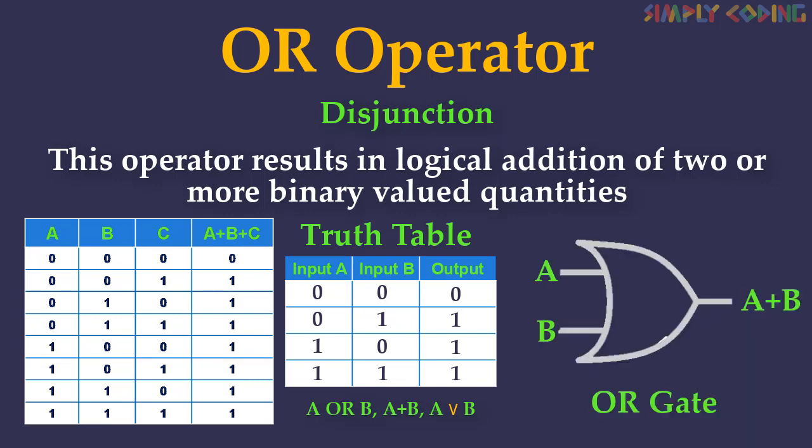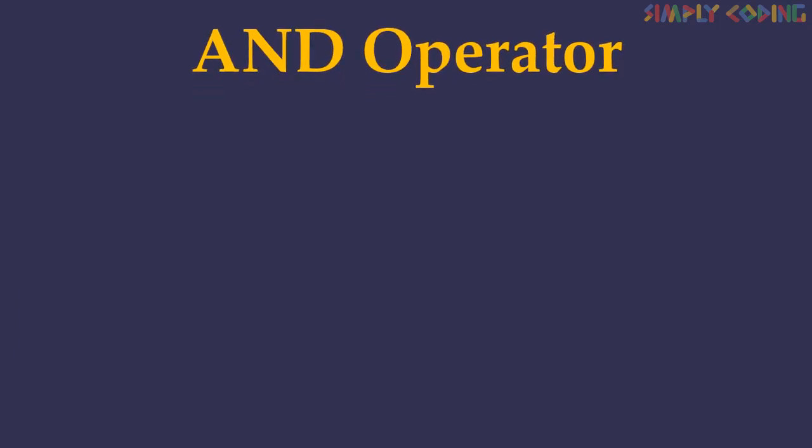The OR operator is denoted by a plus sign or V sign. A real-life example of an OR gate is that a doorbell will ring if the front doorbell is pressed or the back doorbell is pressed. In digital circuits it is called an OR gate. It gives a high output of one if one or more of its inputs are high. An OR gate takes two or more input signals and produces only one output signal.